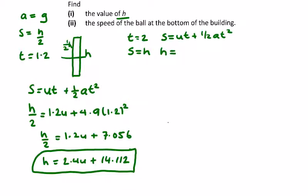...we don't know u, we do know time now is 2, plus half a, so 4.9 by 2 squared this time. So we have h equals 2u plus 4.9 times 4 is 19.6. So we can cancel out our h here.